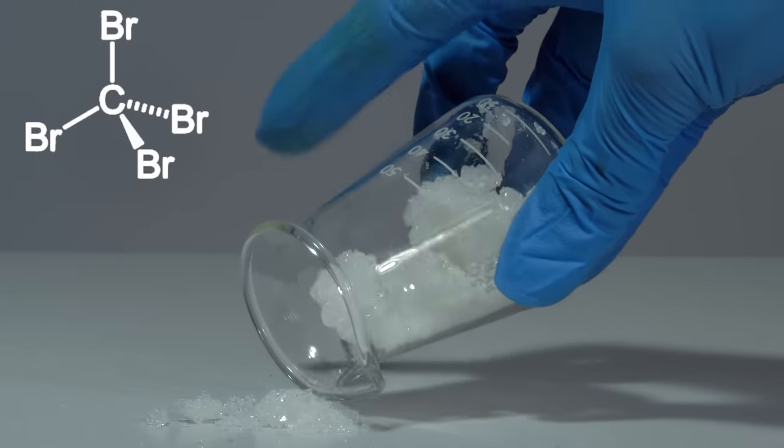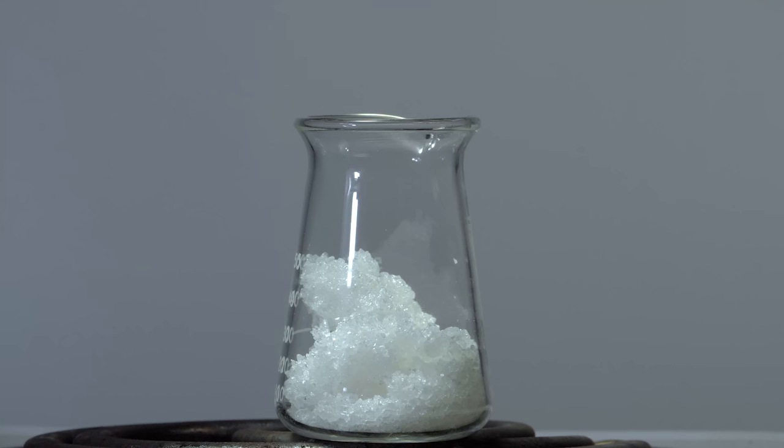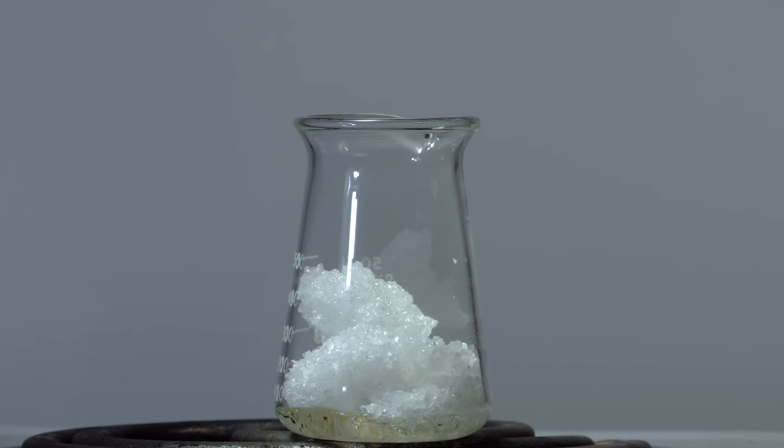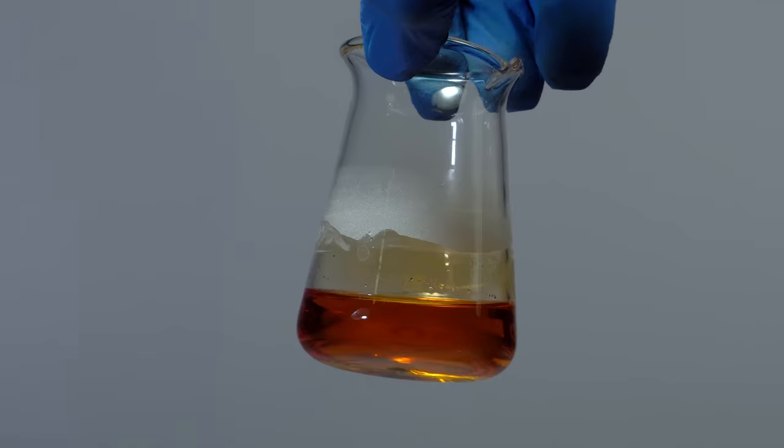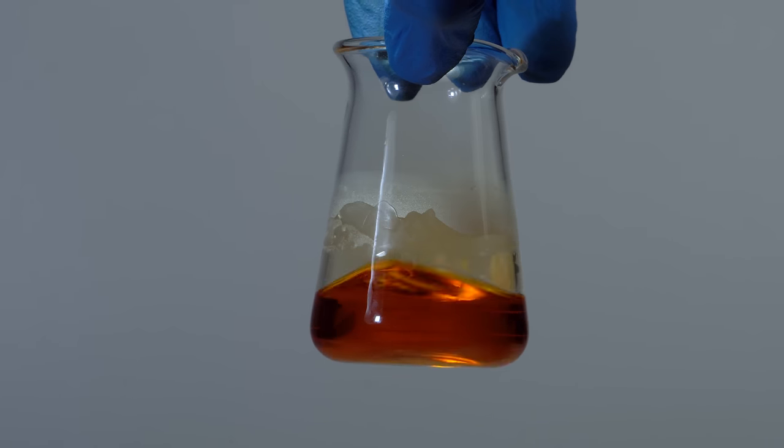These white crystals of tetrabromomethane melt at about 100 degrees Celsius, turning into a brown-orange liquid. Well, let's drop burning magnesium in it.